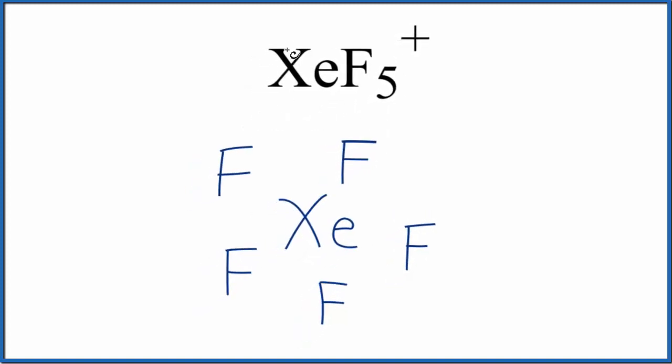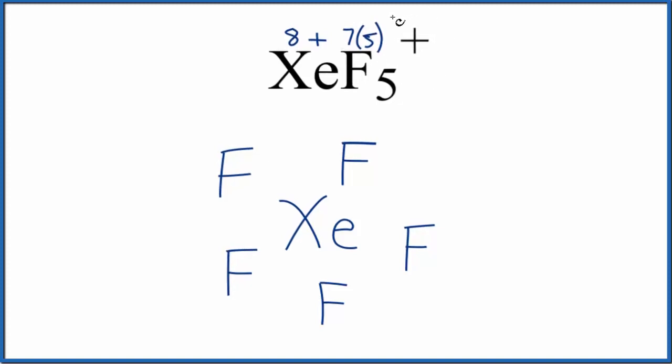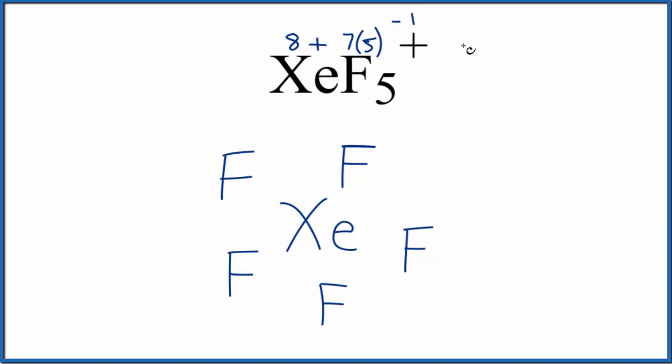Xenon's in group 18, sometimes called 8A. It has eight valence electrons. Fluorine, group 17, sometimes called 7A. That has seven. We have five of those. And then this positive up here, that means we need to subtract one. So we end up with 42 total valence electrons for the XeF5 Lewis structure.